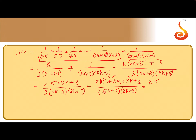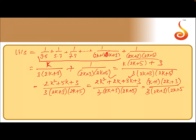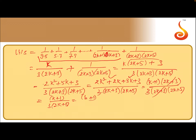Factorizing the numerator 2k²+5k+3 gives (k+1)(2k+3), divided by 3(2k+3)(2k+5). The factor (2k+3) cancels, giving (k+1) divided by 3(2k+5), which equals (k+1) divided by 3(2(k+1)+3). This is the RHS for the statement for k+1.